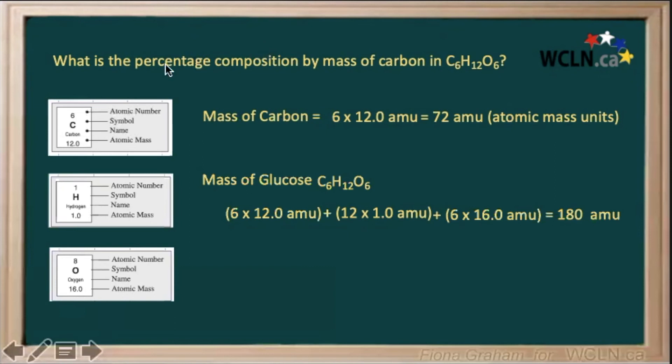We're trying to find the percentage composition of our carbon compared to our glucose. So basically, we just want to calculate the ratio of our carbon to our whole compound. So if we divide that, we get 0.4, which, of course, as a percentage, once we multiply by 100, will give us 40%. So the carbon here is accounting for 40% of the weight of our whole glucose.